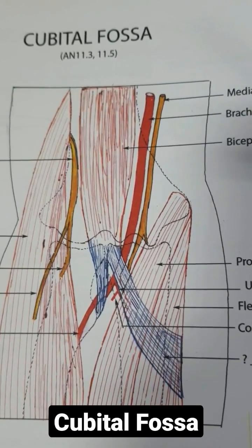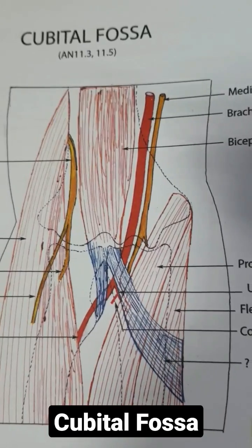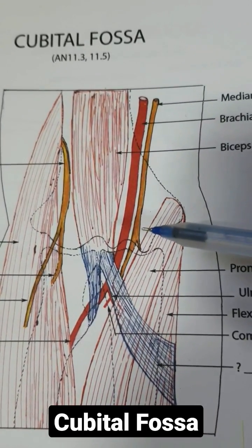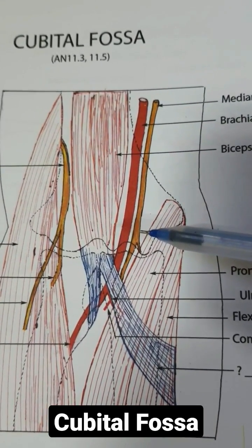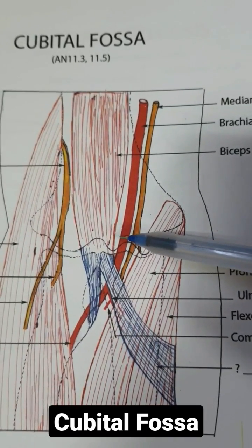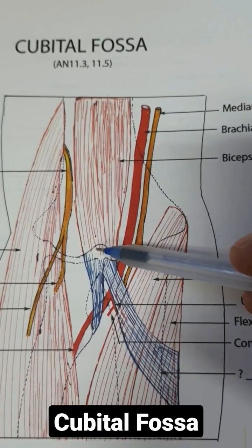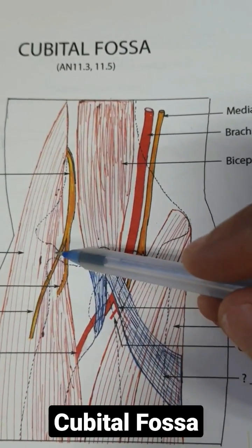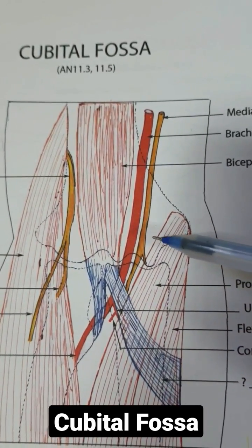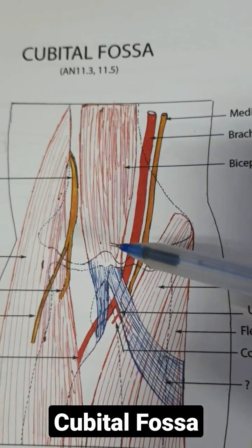The floor is formed by the brachialis and supinator muscles. Now we will talk about the contents, from medial to lateral: the median nerve, brachial artery, bicep tendon, and radial nerve. You can remember this by the mnemonic MBBR.